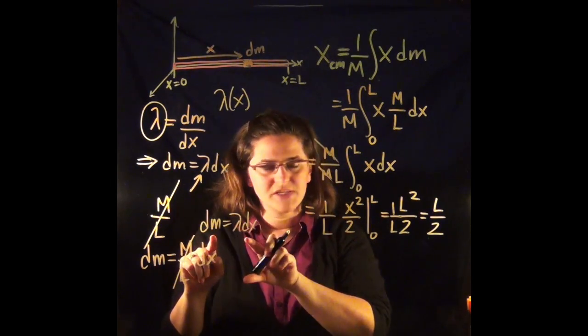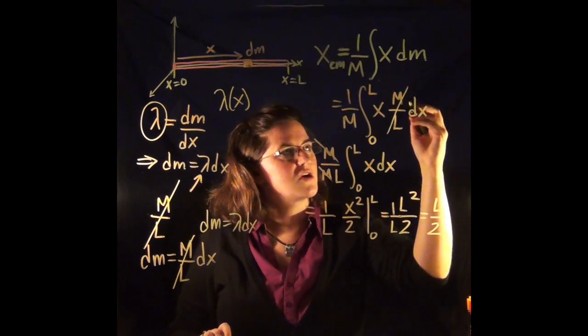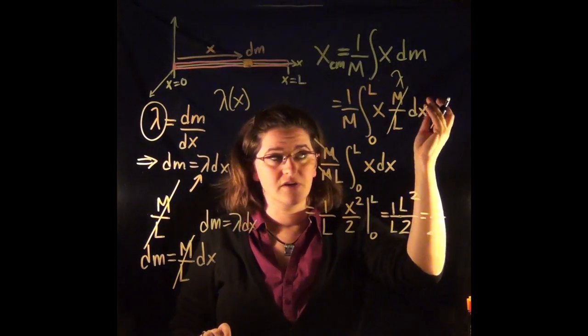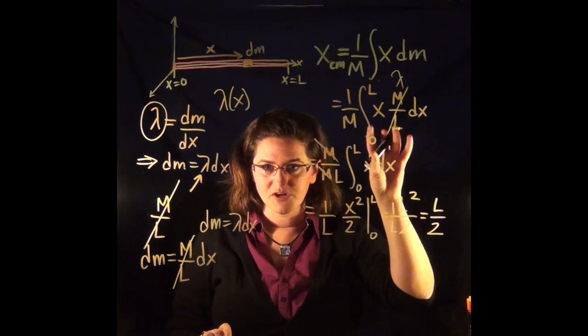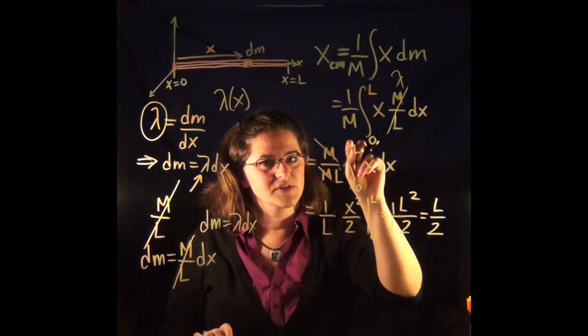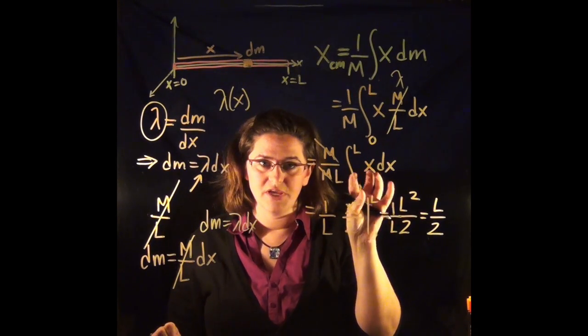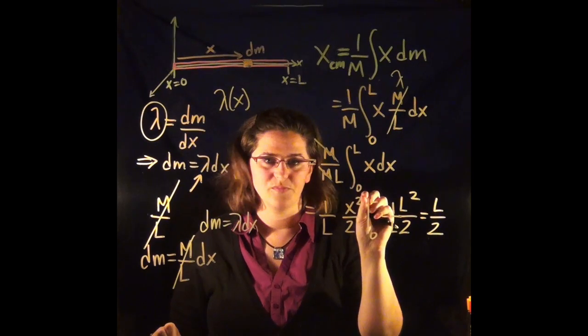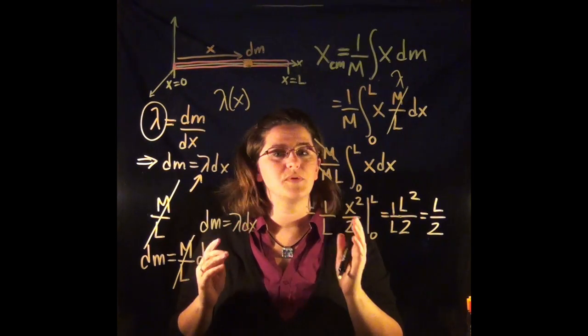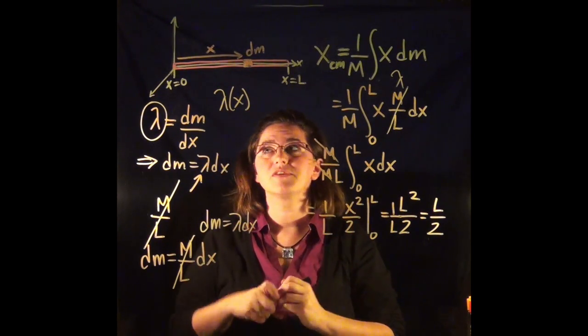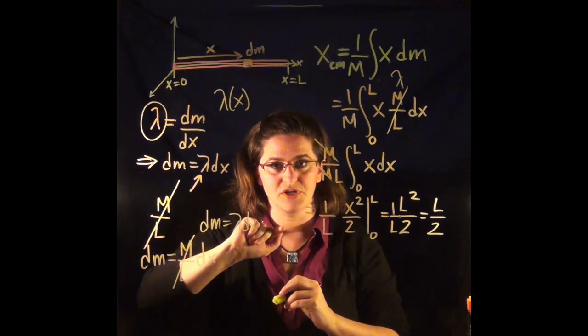Now I'd plug in my dm over here, so this would no longer be here. This would be a lambda. And that lambda is a function of x and it would not be able to be taken out of the integral. It's got to stay inside the integral and be integrated because it contains an x and it wouldn't be able to be taken out. That's what would be different about this problem if this rod was not uniformly distributed mass.